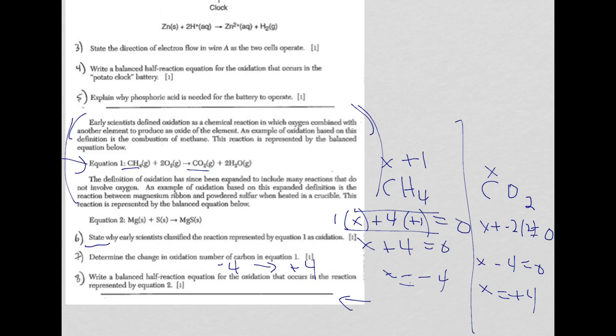Finally, in question 8, you're asked to write a balanced half reaction for the oxidation that occurs in the reaction represented by equation 2. This is the third time now. Every test in 2015 had a student balancing a half reaction for oxidation, and this is the third one.